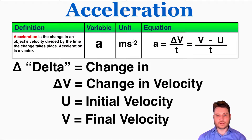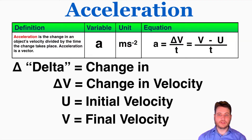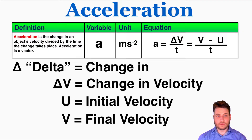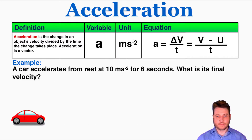The equation for acceleration is the change in velocity over the time that has passed. The change in velocity is equal to the final velocity minus the initial velocity. So as an example, if your final velocity is 5 meters per second and your initial velocity is 2 meters per second, the change in your velocity is the final minus the initial, or 3 meters per second.